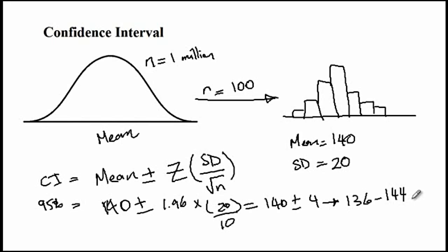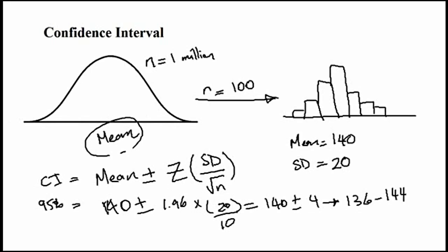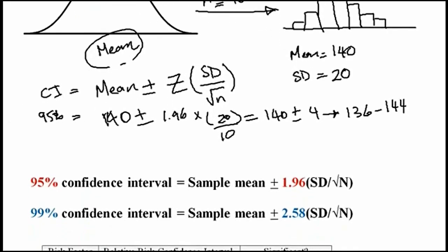We are 95% sure that the mean blood sugar for people that are out there will fall somewhere between 136 and 144. As I mentioned earlier, you do not need to memorize the table for z score. The only two values that you will need to know is for 95% confidence interval, it is 1.96, and for 99% it is 2.58.